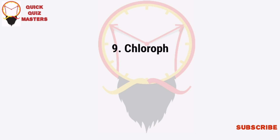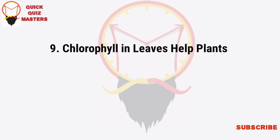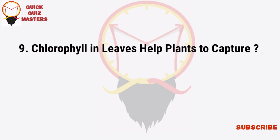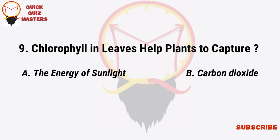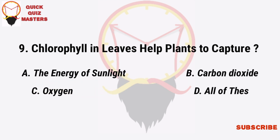Chlorophyll in leaves helps plants to capture the energy of: sunlight, carbon dioxide, oxygen, all of these.